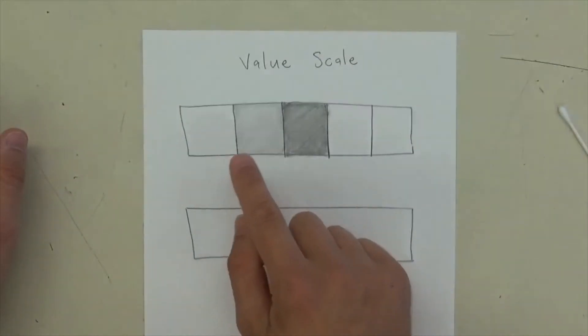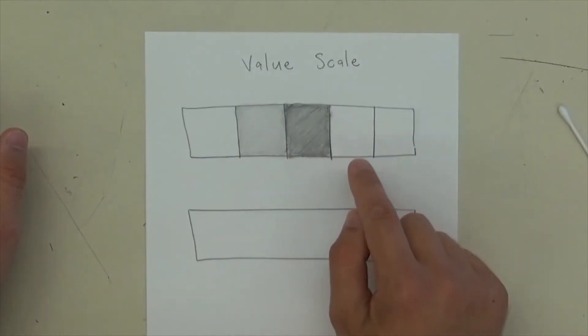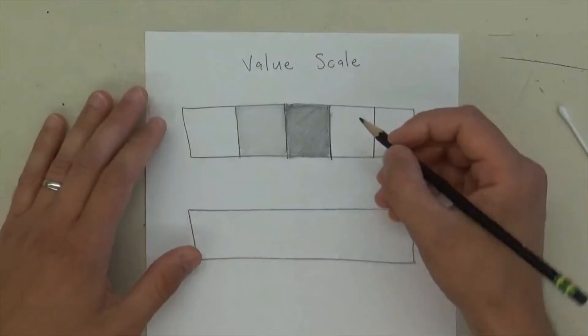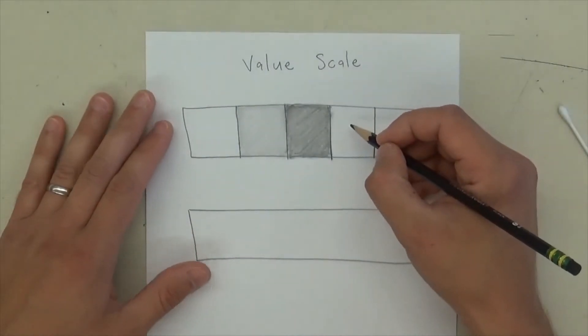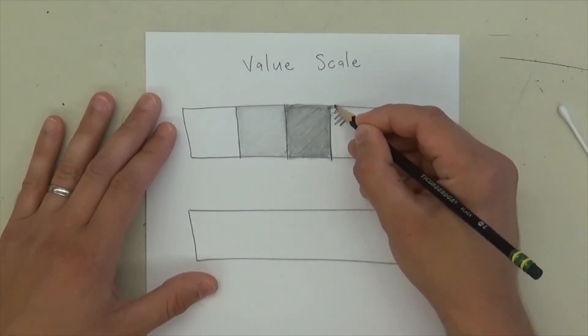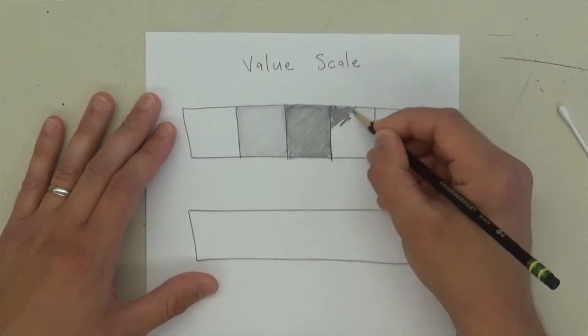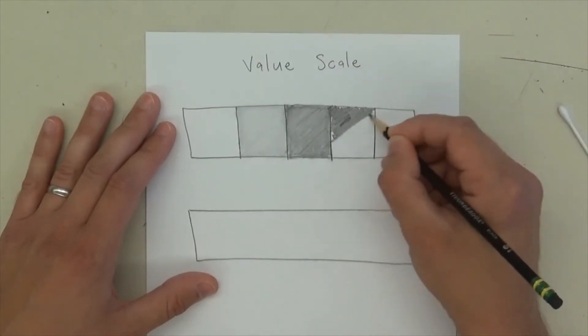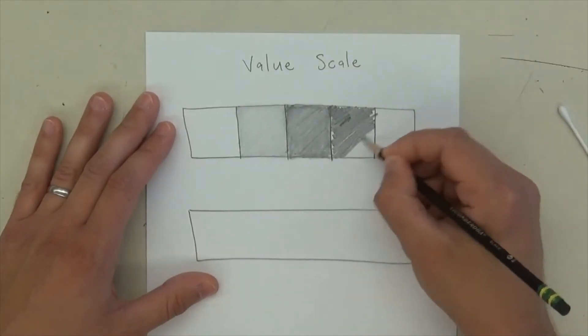So there we go. So I have white, light, medium, now I'm going to go dark. So to do that, I have to push down a lot harder. So I'm going to shade in and fill up this whole box, but this time I'm going to push down way harder than I did before.